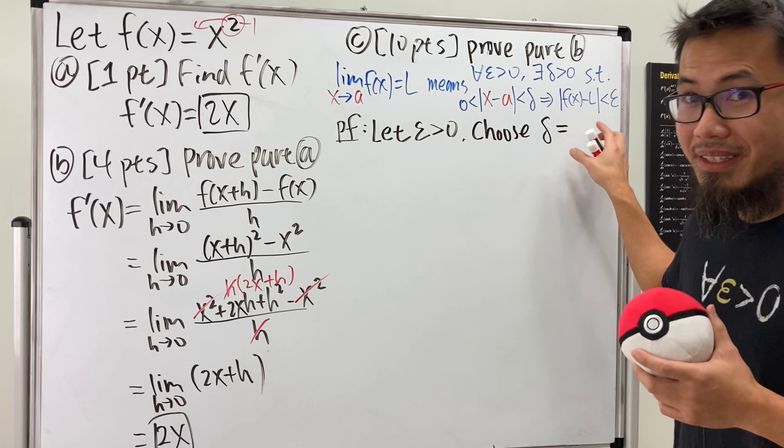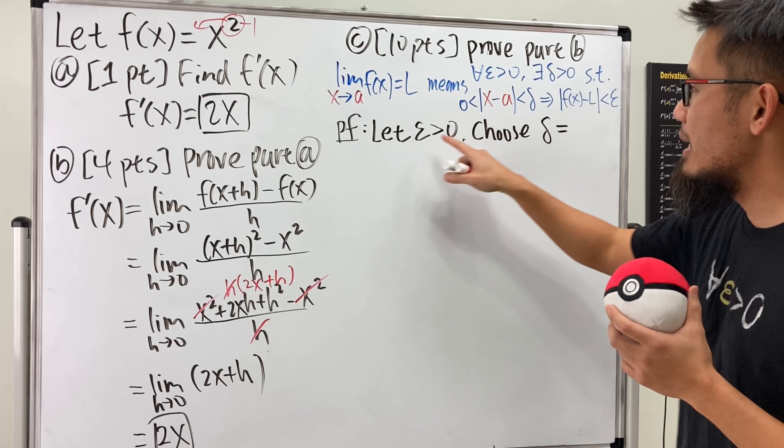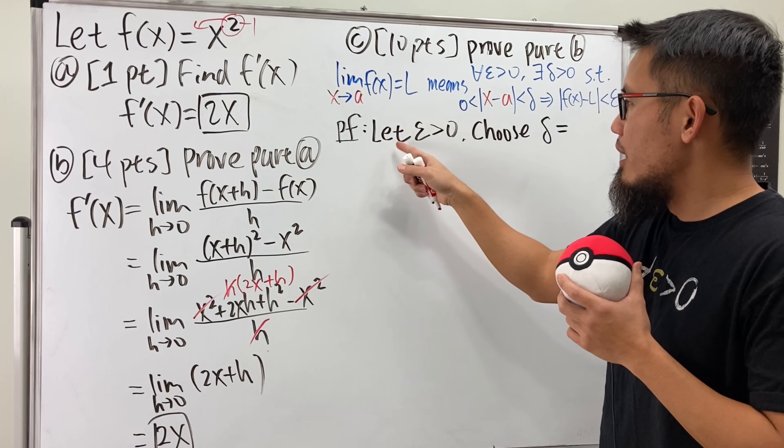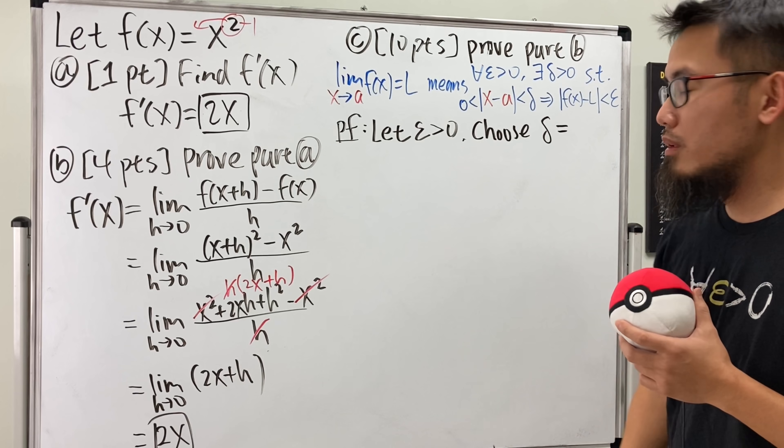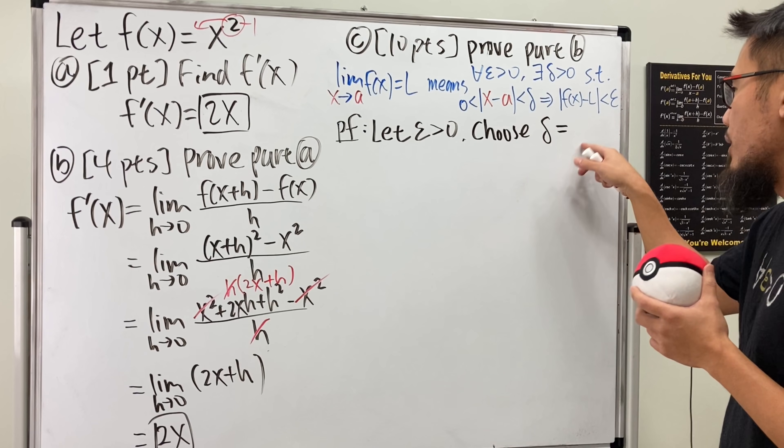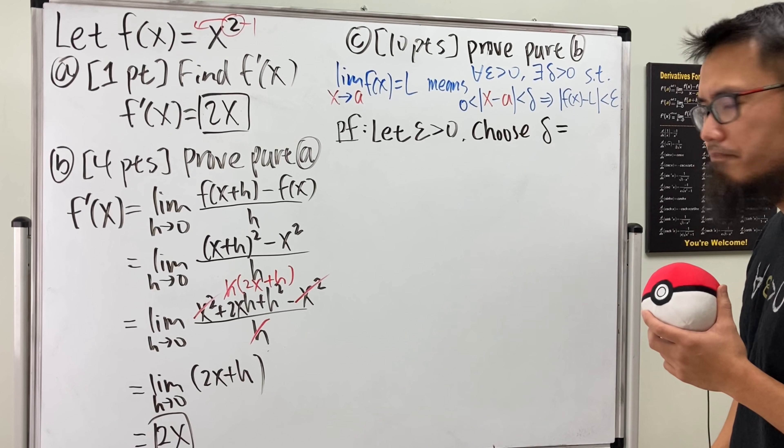Okay, so we have a delta already. And you have to keep in mind, this delta will actually be based on epsilon because you have the epsilon greater than zero already. This is perhaps the only thing you can work with, right? All right, so I'll choose delta to be blank, and then this has to be based on epsilon, but I don't know what it is yet. Let's just continue.